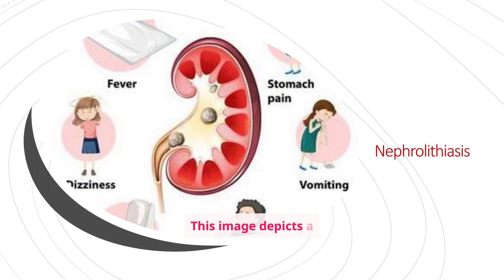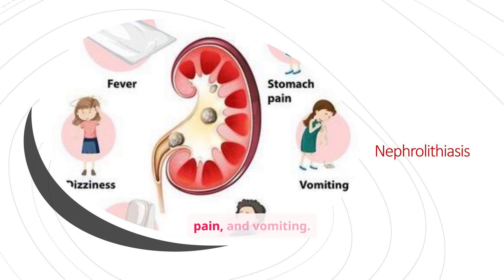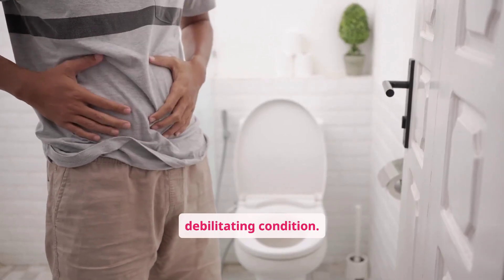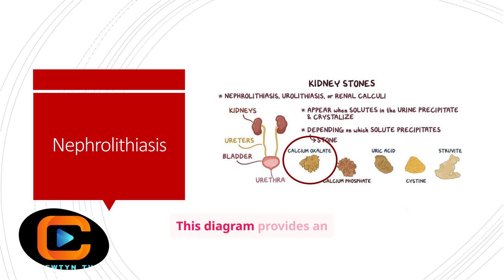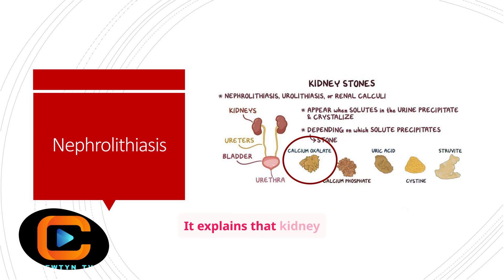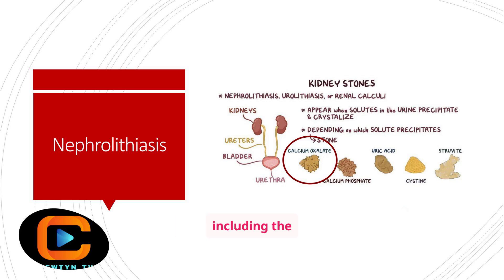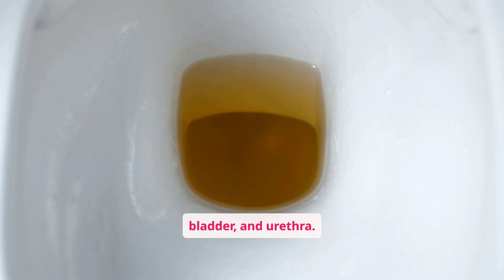This image depicts a kidney with kidney stones, surrounded by illustrations of common symptoms such as fever, dizziness, stomach pain, and vomiting. Nephrolithiasis can be a very painful and debilitating condition. This diagram provides an overview of kidney stones, including their formation and different types. It explains that kidney stones appear when solutes in the urine precipitate and crystallize. The diagram also shows the urinary system, including the kidneys, ureters, bladder, and urethra.